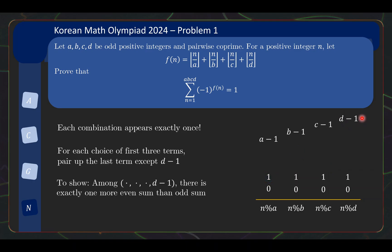But that means what you are now left with, you simplify the problem. Now you need to show that among the combinations where the last term is d minus 1, there is exactly one additional even sum than odd sum. Okay, thankfully, d minus 1 is even, so whether this sum is even or odd actually depends on the first three terms, the last term will be congruent to 0 mod 2.